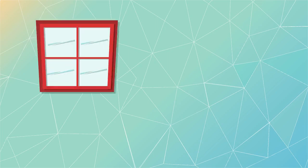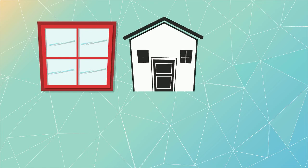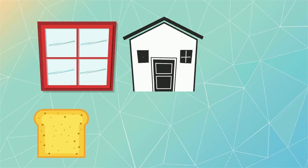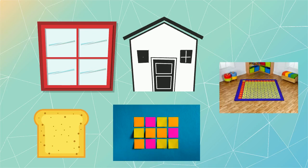There are many things around us that have a square shape. For example, some windows in buildings have a square shape. The slice of bread has a square shape. The sticky note and the carpet also have a square shape.